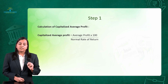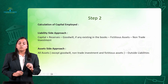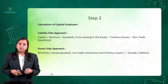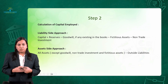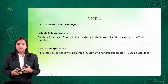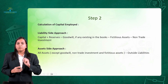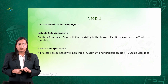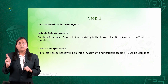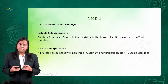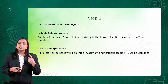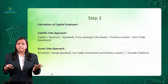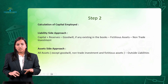Step number 2: I need to calculate Capital Employed. Usually it is given in the question, but if not, we have two approaches. The first is the Liability Approach and the second is the Asset Side Approach — the same as we studied in the Super Profit Method. The methodology remains the same; there is no change at all.